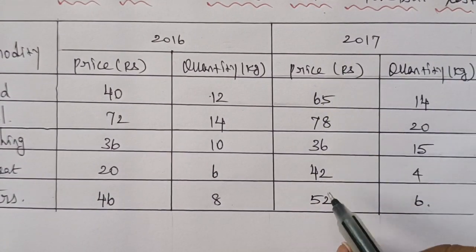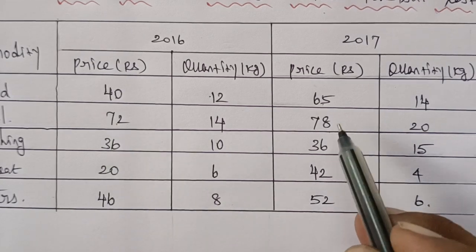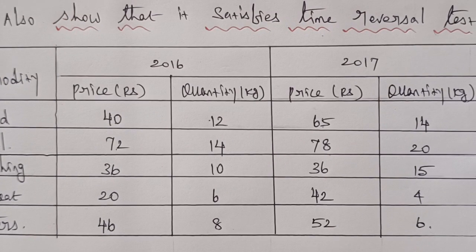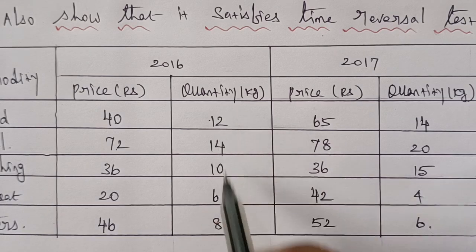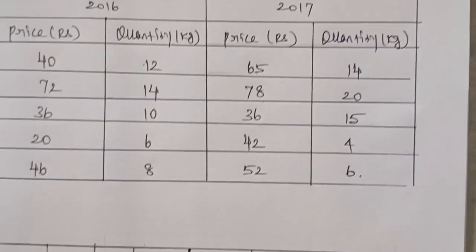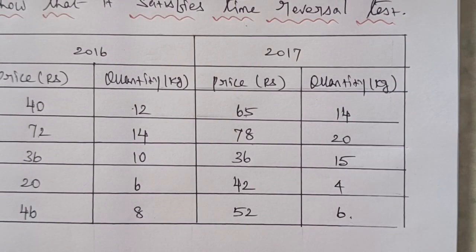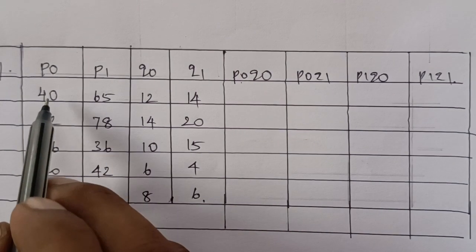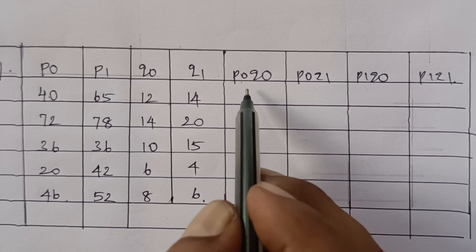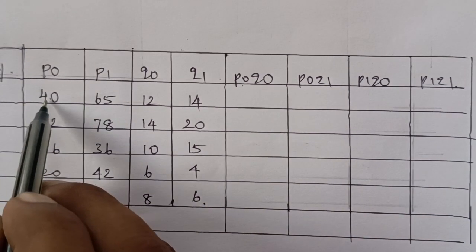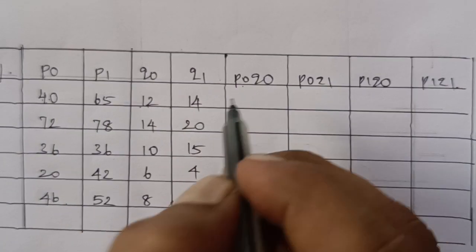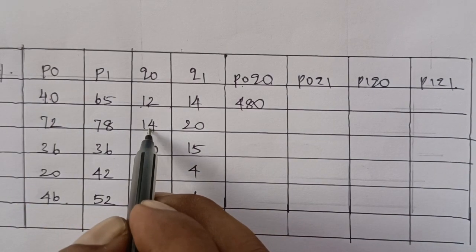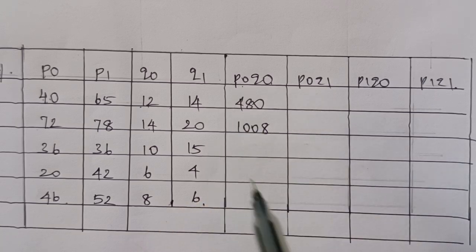On the P0Q1 column, you can enter the data. P0 is outside. Let the data fill the table. This is P0 and Q1. This is 72 into 14. This is 1008.